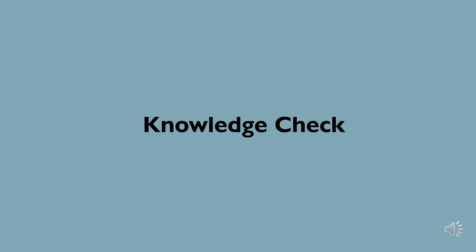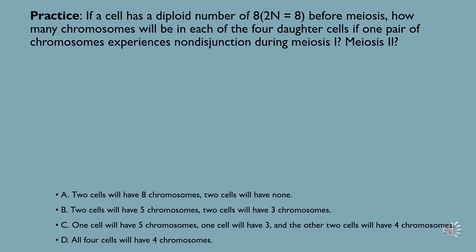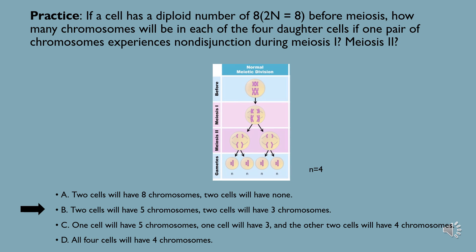Now that we understand how nondisjunctions differ between mitosis and meiosis, let's try a practice problem to apply our knowledge. If a cell has a diploid number of 8 before meiosis, how many chromosomes will be in each of the four daughter cells if one pair of chromosomes experiences nondisjunction during meiosis I? If you answered B, then you are correct. We know that the diploid number of chromosomes is 8, so if meiosis occurs normally, each of the gametes should have the haploid number of four chromosomes after division.